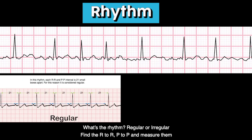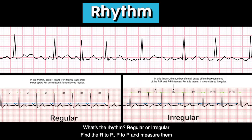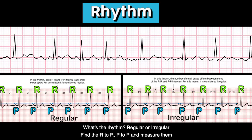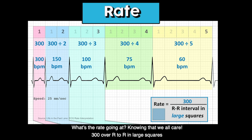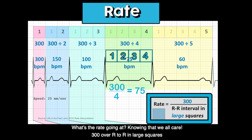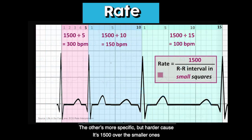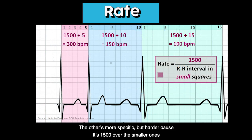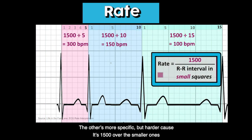What's the rhythm? Regular or irregular? Find the R to R, P to P and measure them. What's the rate going at, knowing that we all care? 300 over R to R in large squares. The other's more specific but harder, cause it's 1500 over the smaller ones.